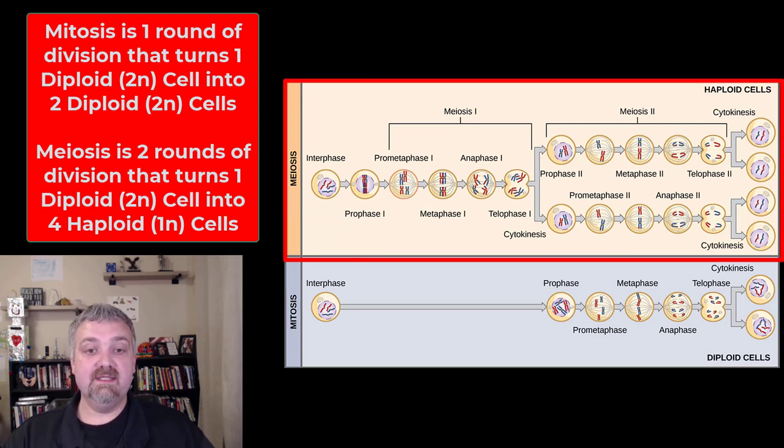Whereas meiosis, what you see here is you start with one cell with 46 chromosomes. Then you have two rounds of division, meiosis 1 and meiosis 2. So instead of ending with two cells, you end with four cells. But these four cells are haploid, meaning they only have one set of chromosomes. So your body cells are going to undergo mitosis. Your sex cells are going to undergo meiosis because sperm and egg cells are the only cells you want that have one set of chromosomes, only 23.